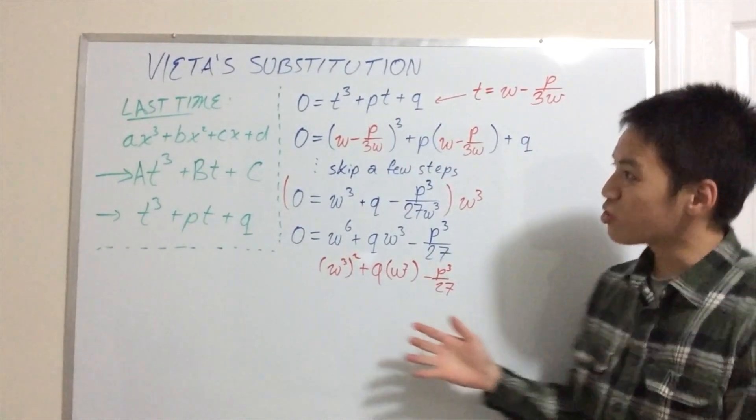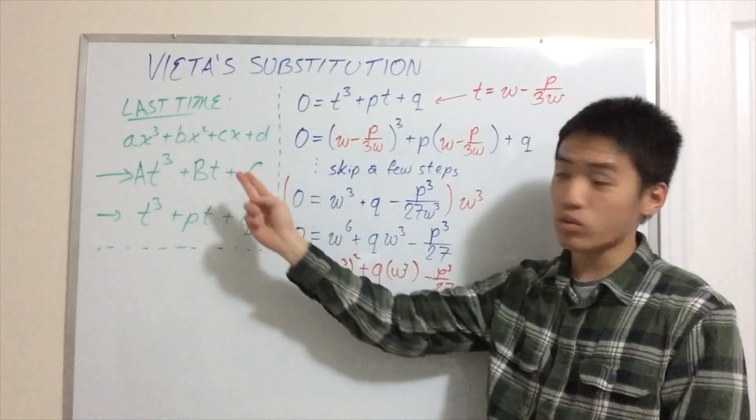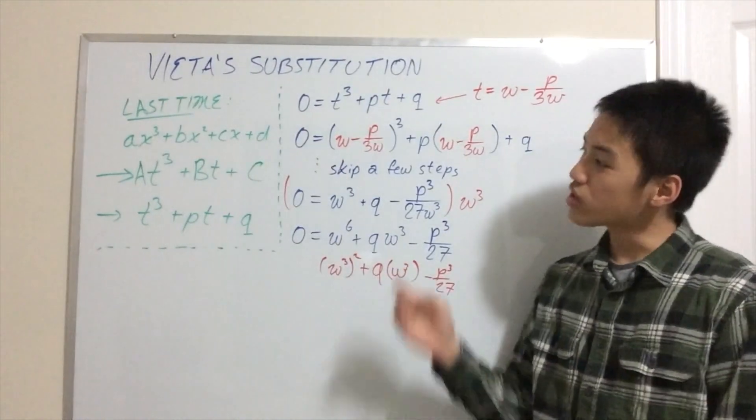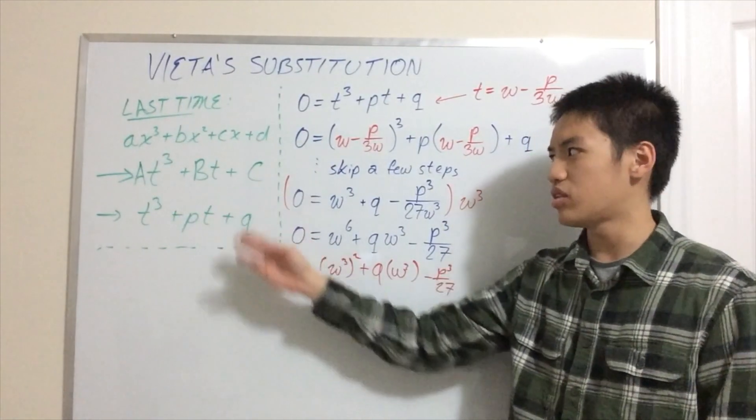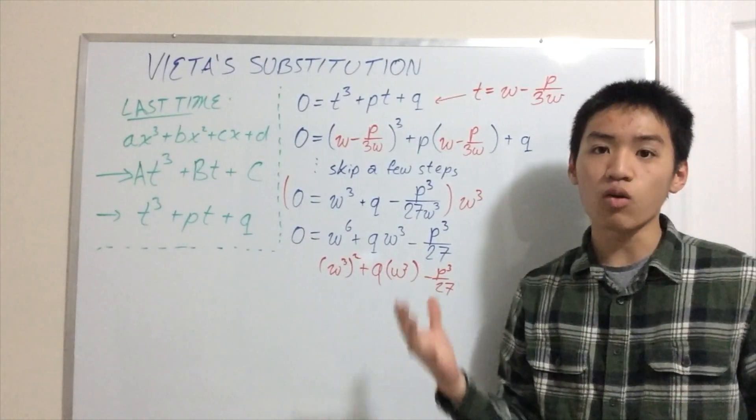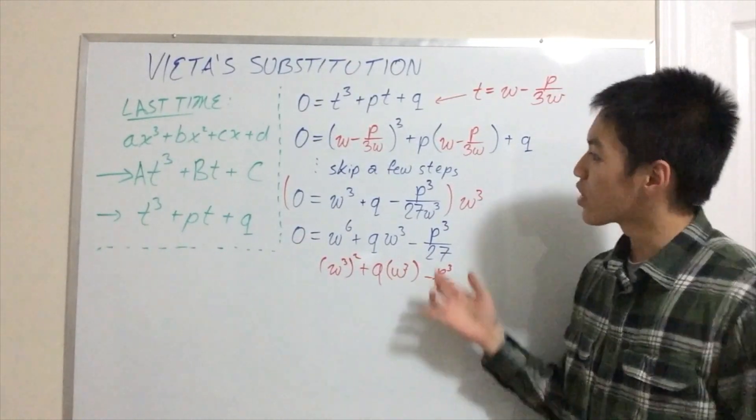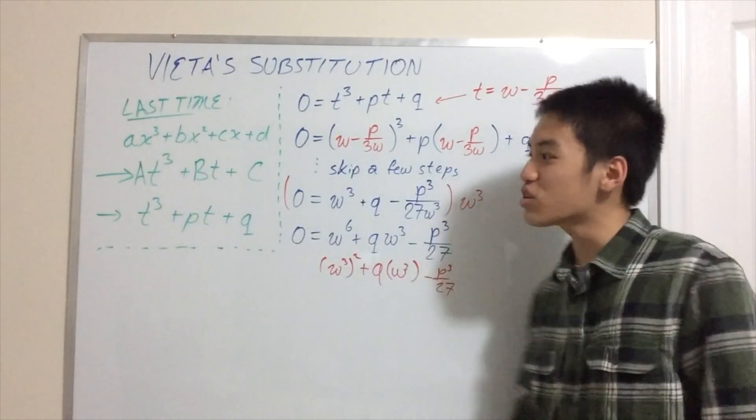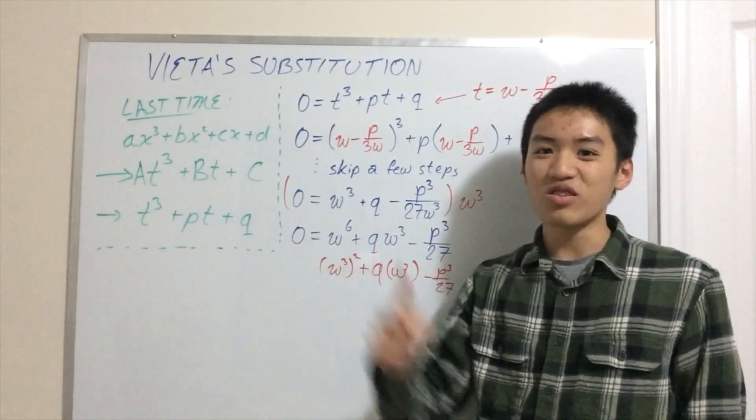So last time we saw it, we started with the cubic function ax³ + bx² + cx + d. We can turn that into at³ + bt + c using a substitution that looks just like a horizontal translation. And we divide by the leading coefficient, we end up with t³ + pt + q.